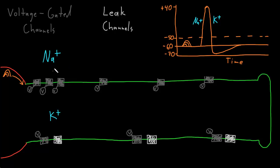This movement of sodium and potassium ions across the membrane, creating the waveform of the action potential, starts at the trigger zone at the axon initial segment and then rapidly spreads in waves down the axon. First there's a wave of depolarization from opening of the voltage-gated sodium channels spreading rapidly down the axon. Following right behind it is a wave of hyperpolarization caused by potassium exiting through the voltage-gated potassium channels and the leak channels — producing the rising phase, the peak, and the falling phase of the action potential.